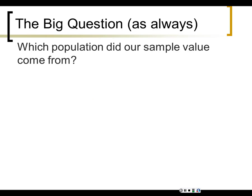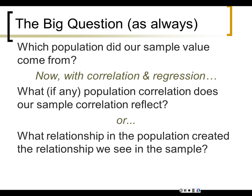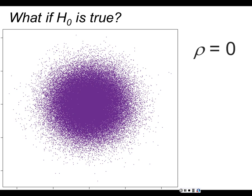The big question is always: which of those populations did our sample correlation come from? Which pattern of association between population variables is reflected in our sample? Our sample is telling us about what's going on in the population — what relationship in the population created the relationship we see in the sample? The null hypothesis is important to think about: it always says rho equals zero.